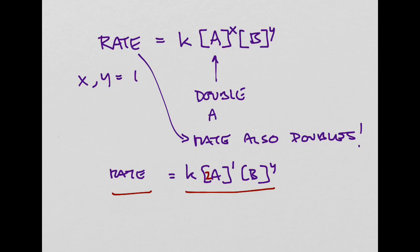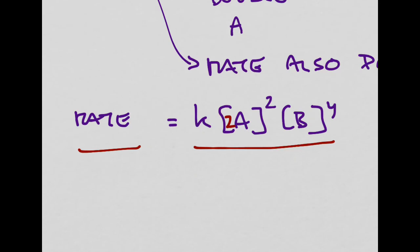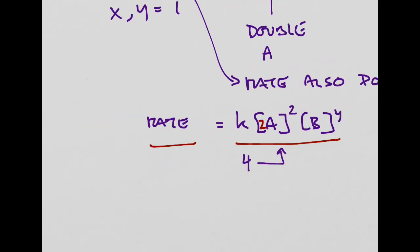Now imagine X equals 2 instead of 1. When I double A, that 2 is raised to the second power, making the whole expression 4 times larger — because 2 squared is 4. That means the rate will be 4 times faster.